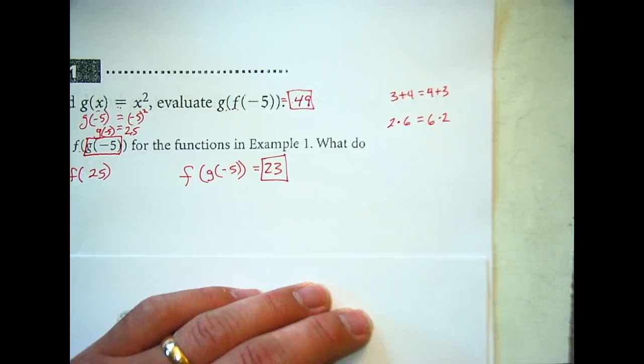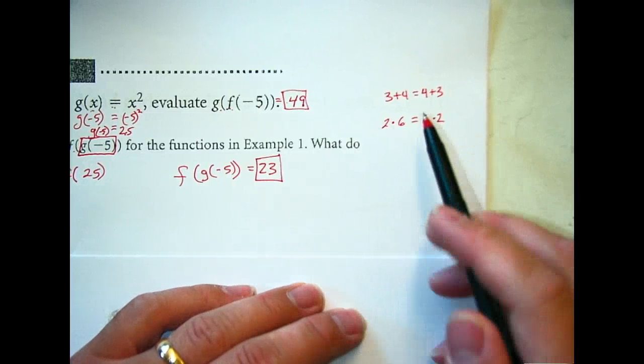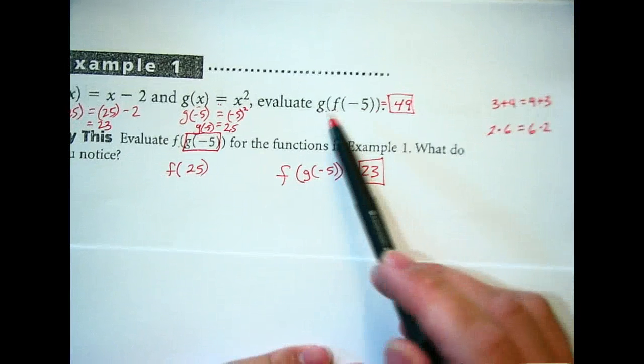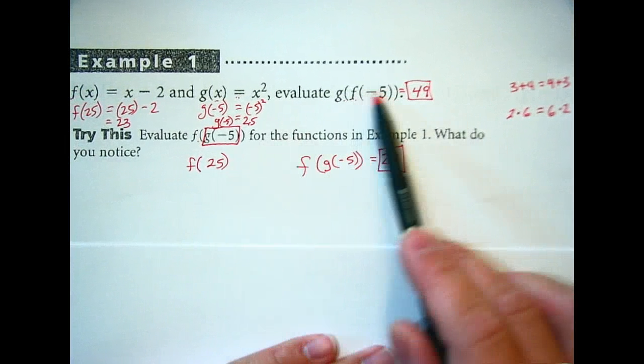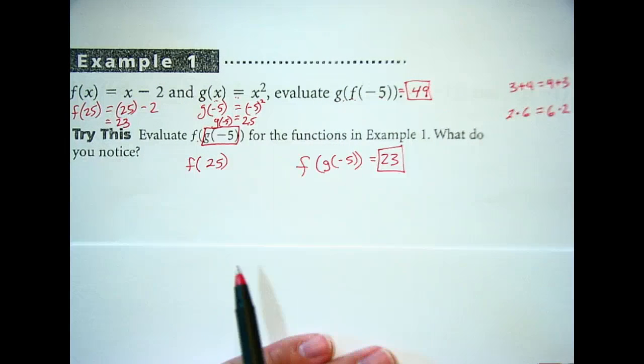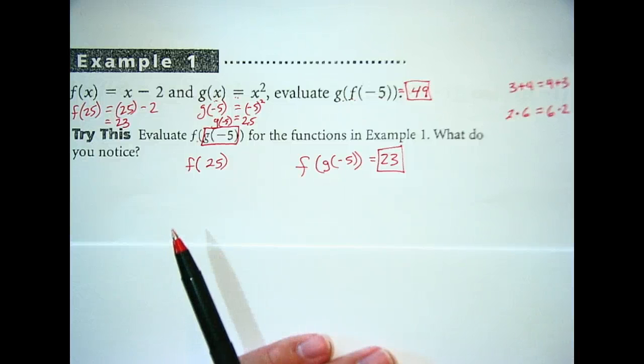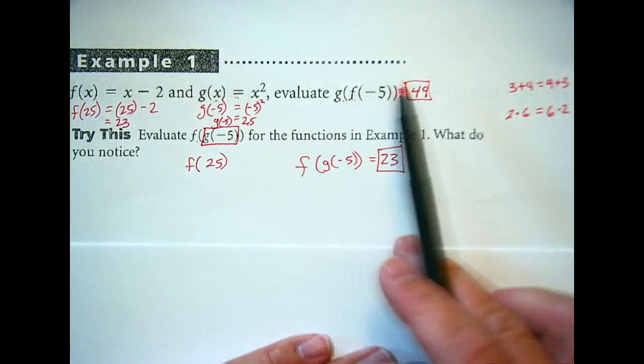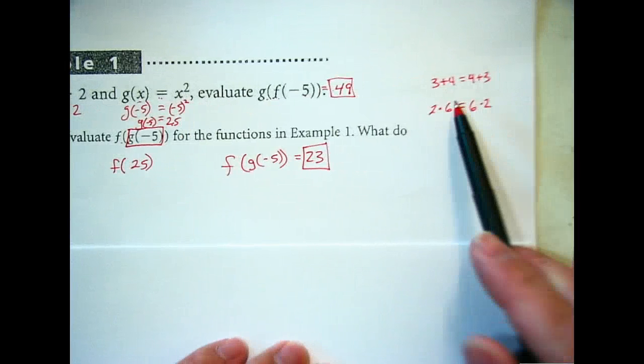It's like commuting to work and back. It's commutative property. Is our functions, our composition of functions, are they commutative? Does order matter? Yeah, the order in which you do them matters. So they're not commutative. Here, order didn't matter.